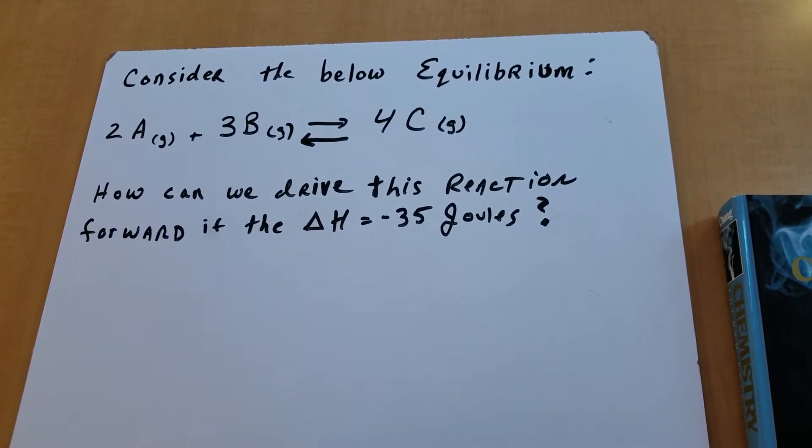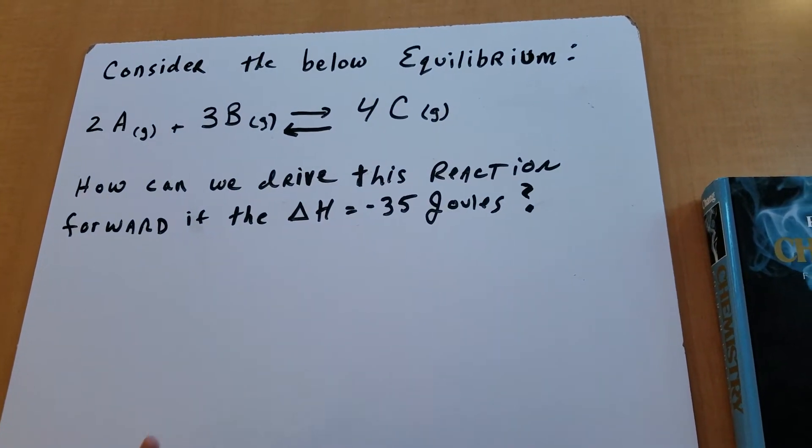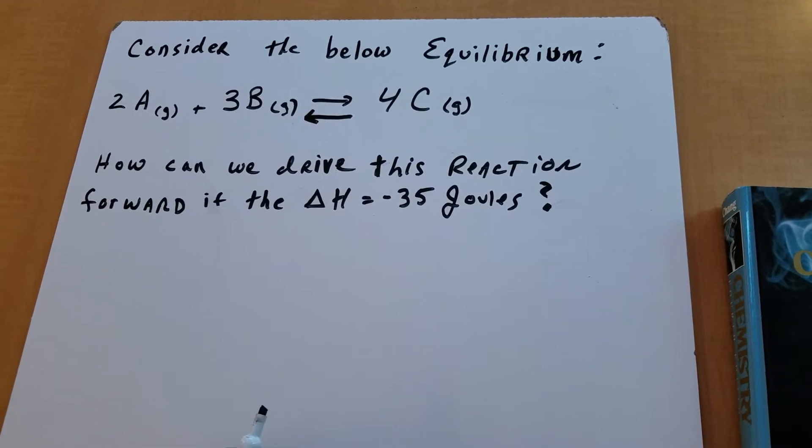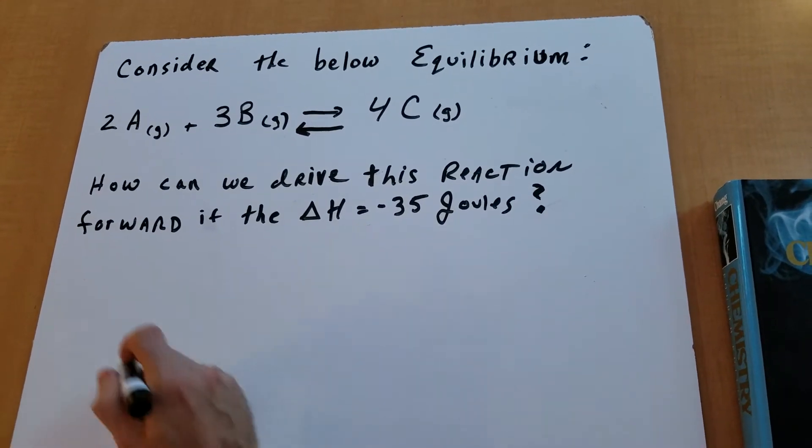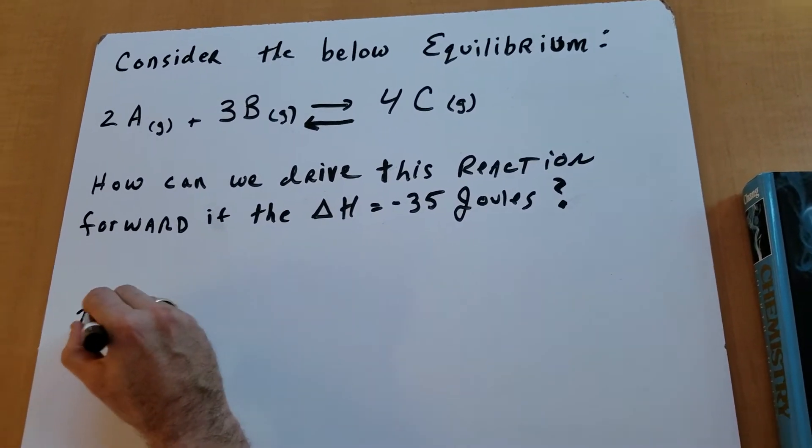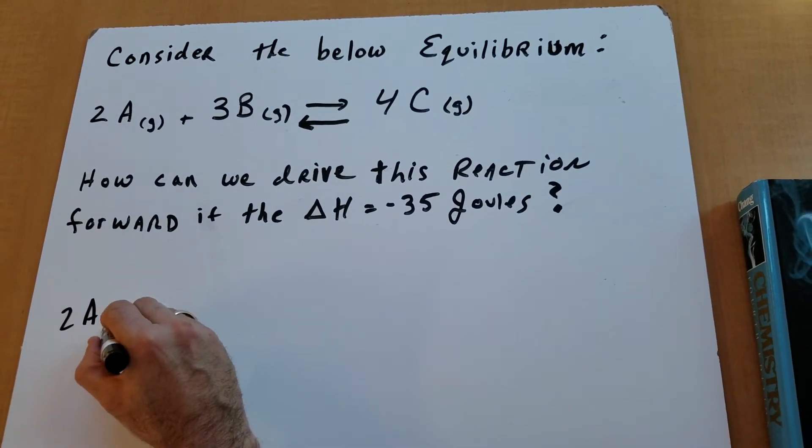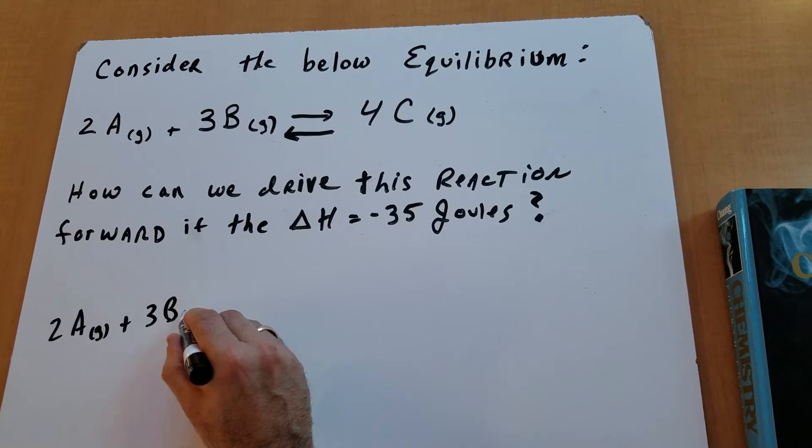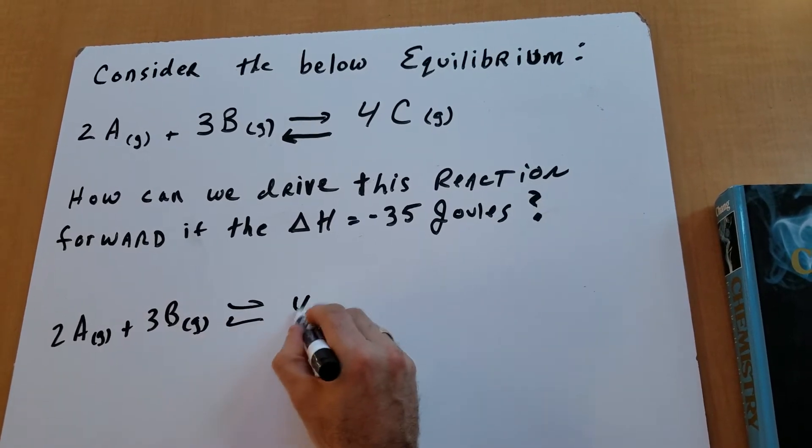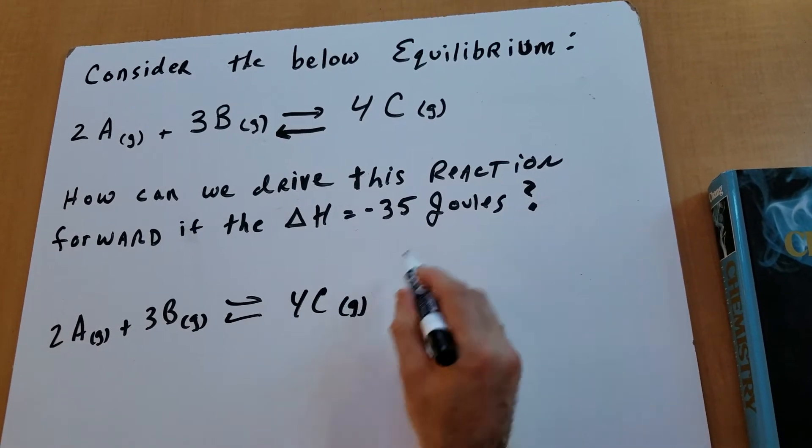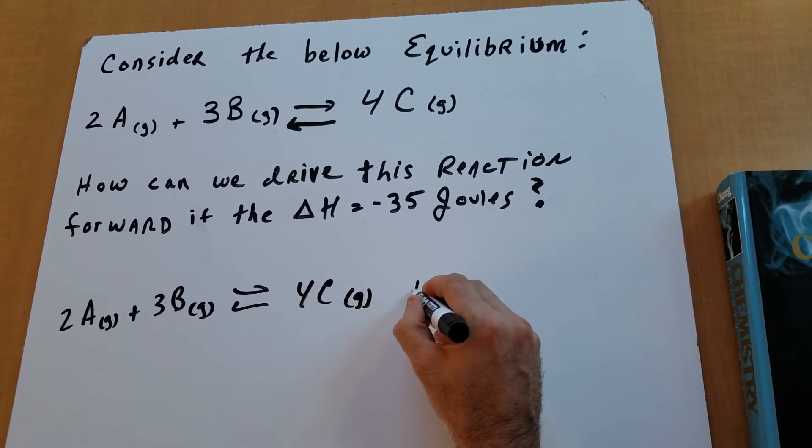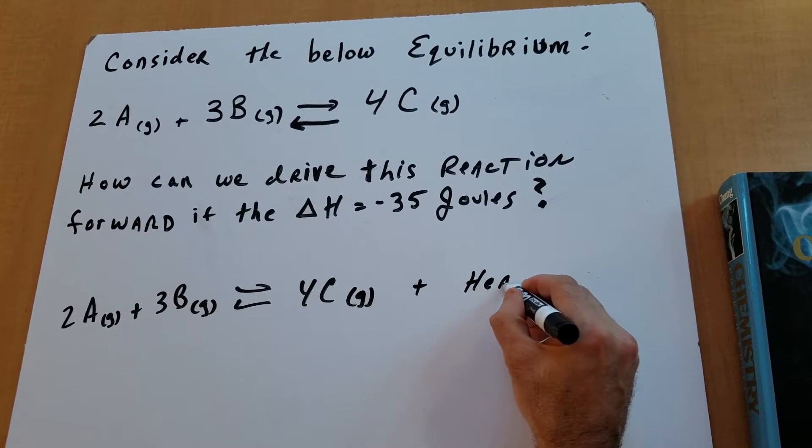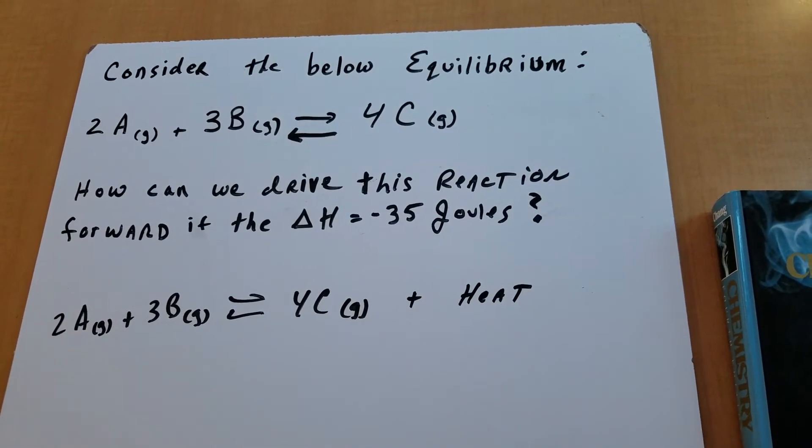Now, the first thing that you're going to do in any type of question you get on the DAT on equilibrium is to rewrite the equation. So let's do it. So I'm going to get 2A, and it's a gas, plus 3B, it's a gas, gives 4C in a gas, and it's exothermic because it's negative. So that means the heat is on the right side of the equation, because heat is given off.